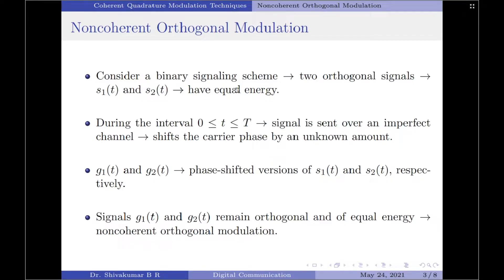To understand non-coherent orthogonal modulation, consider a binary signaling scheme involving two orthogonal signals s1(t) and s2(t), which also have equal energy during the interval 0 to T. One of these two signals is sent over an imperfect channel that shifts the carrier phase by an unknown amount. Let g1(t) and g2(t) denote the phase-shifted versions of s1(t) and s2(t) respectively.